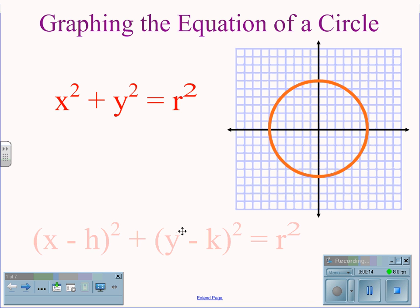This equation can be expanded to x minus h quantity squared plus y minus k quantity squared equals r squared if the center of the circle is not at the origin. Therefore, the center of the circle will be the negative value of h and the negative value of k for your x and y coordinates, and r still remains the radius of the circle.